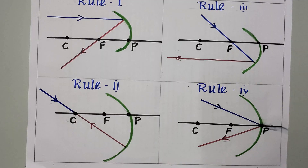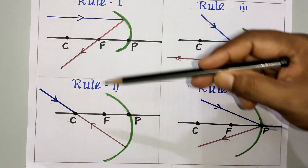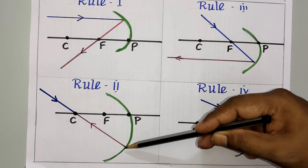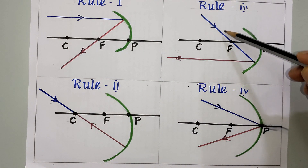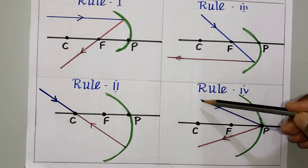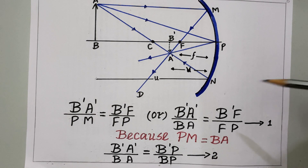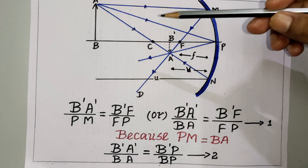After focal length, we move to the mirror equation. We have already studied 1/f = 1/v + 1/u in Class 10. In Class 12 we will derive this formula. For the derivation we need to remember four ray diagram rules: first, a ray parallel to the principal axis reflects through F; second, a ray through C reflects back through C; third, a ray through F reflects parallel to the principal axis; fourth, a ray striking the pole follows the law of reflection.